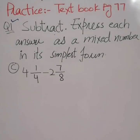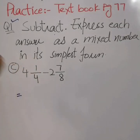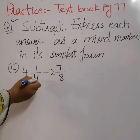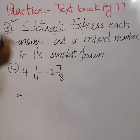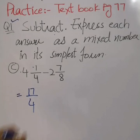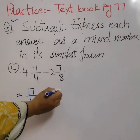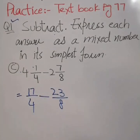The remainder becomes the numerator and the denominator remains the same. This is how we solve these mixed numbers. Now for part c, we split the mixed numbers into improper fractions by multiplying the denominator with the whole number and then adding the numerator. We get 17 over 4 minus 23 over 8.